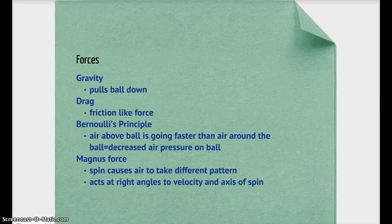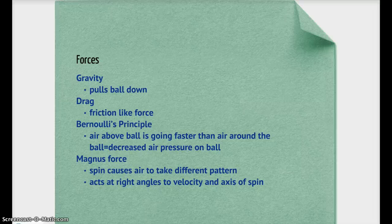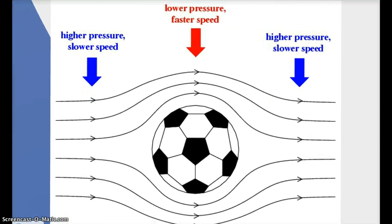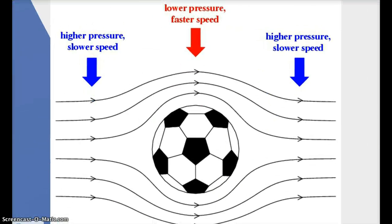Now here are some forces. Gravity, drag, and magnus force act on the flight of the ball. Gravity pulls objects towards the earth. Drag is like friction and slows down the horizontal velocity of the ball. Faster speeds means larger effect of drag. Let's look at some pictures to understand Bernoulli's Principle and Magnus Force. Bernoulli's Principle says the air moving above the surface of the ball is going faster than the air around the ball. This creates decreased air pressure on the ball.